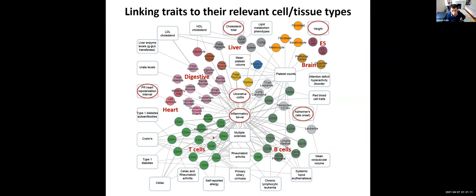This allows us to cluster all these enrichments between different tissues and different traits — for example, cholesterol and liver; ulcerative colitis implicating both immune processes and digestive tissues; heart repolarization with left ventricle; height with embryonic stem cells and fibroblasts; and Alzheimer's sitting among the immune traits but specifically with monocytes rather than circulating adaptive immune cells.